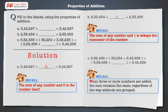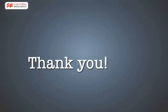Let's recall that when three or more numbers are added, the sum remains the same, regardless of the way addends are grouped. Thus, write 56,234 in the blank.